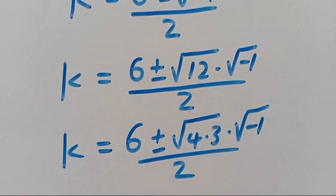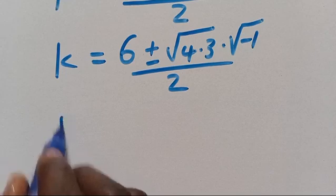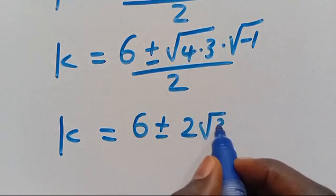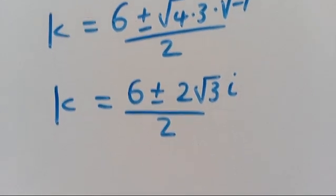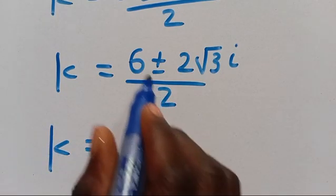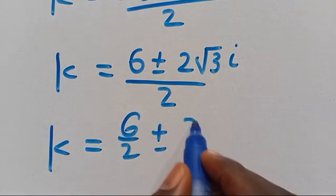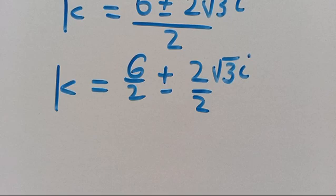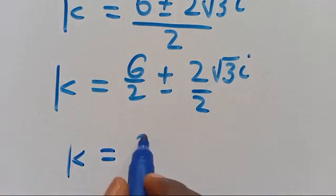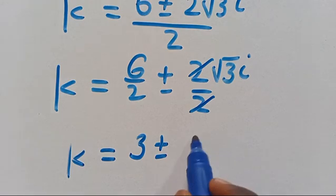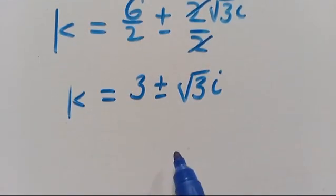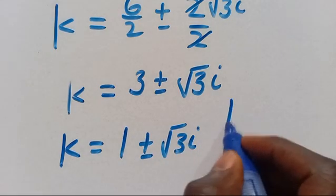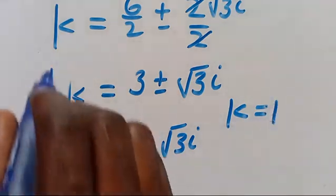Simplifying: 6 divided by 2 gives 3, and we cancel the 2, leaving root 3 i. So K equals 3 plus or minus root 3 i. Combining with Case 1, our solutions are K equals 1 plus or minus root 3 i from Case 1, K equals 3 plus or minus root 3 i from Case 2, and K equals 1. These are the solutions for the value of K.